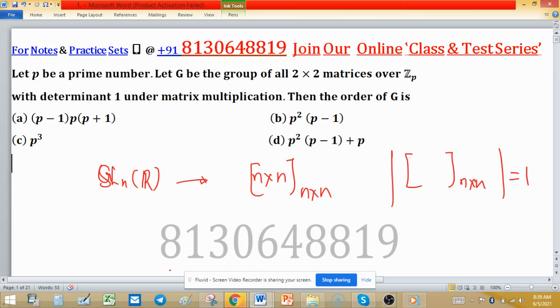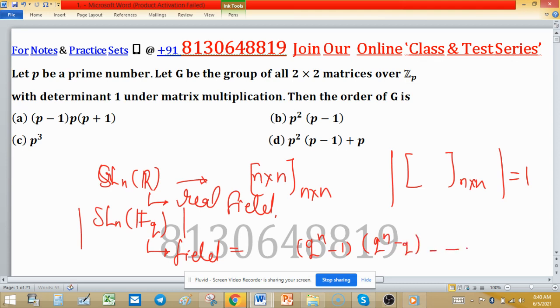Then we say this is the general special linear group of order n. Whenever you're asked about finding the order of SL_n over F_q, where this is a field—here a real field—then the order of SL_n(F_q) is equal to q^(n-1) times q^n minus q, and so on, up to q^n minus q^(n-1), all divided by q minus 1.